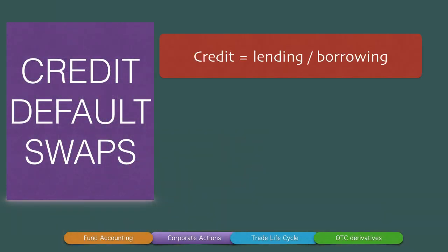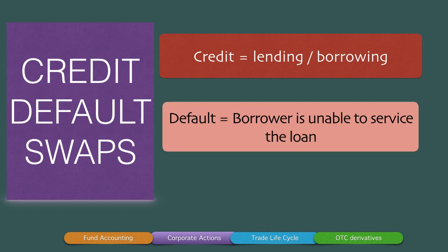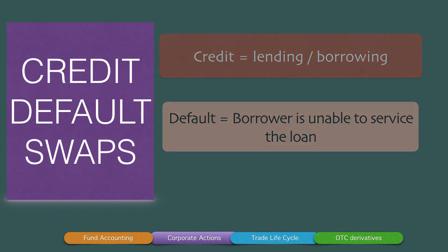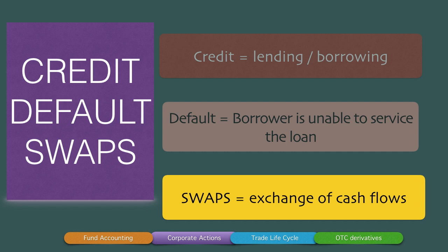Credit default swaps — let's break down the word. 'Credit' means a relationship of a lender and a borrower. 'Default' means you're anticipating the borrower to default. The crisis of default arises when a borrower is not able to pay the interest on the loan or is not able to pay the principal repayment. So if either of these two instances occur, after a grace period of about 90 to 120 days, the borrower is categorized as a defaulter. 'Swaps' means an exchange of cash flows. So these three ingredients make up what are called credit default swaps.